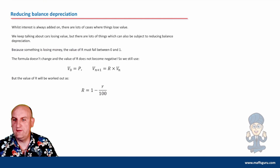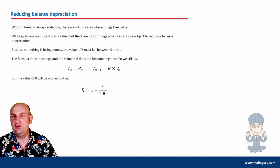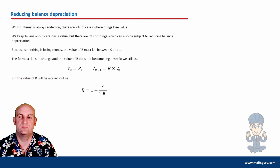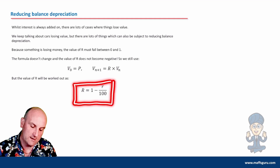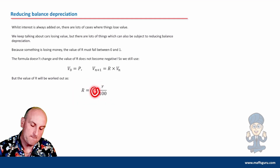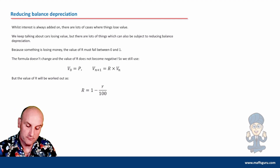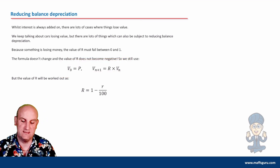Reducing balance depreciation. Flat rate depreciation is where the value goes down by the same amount each period. Reducing balance depreciation is where it goes down by a certain percentage each period. Because it is depreciation, my R formula becomes 1 minus r divided by 100 — minus because depreciation means it's going down. The rest of the recurrence relation formula stays exactly the same, we just change it to a minus sign.